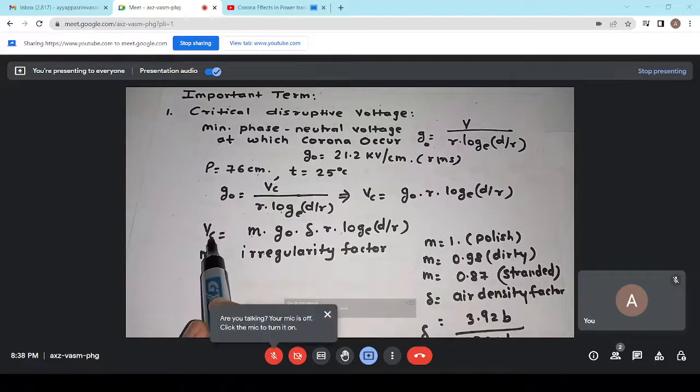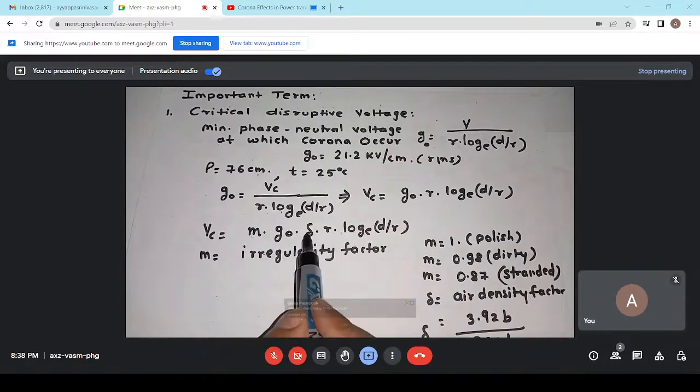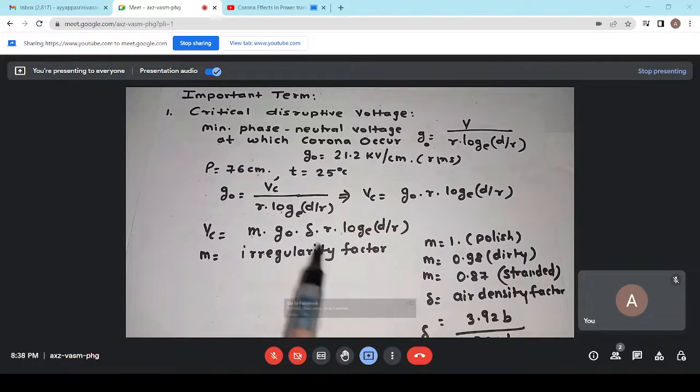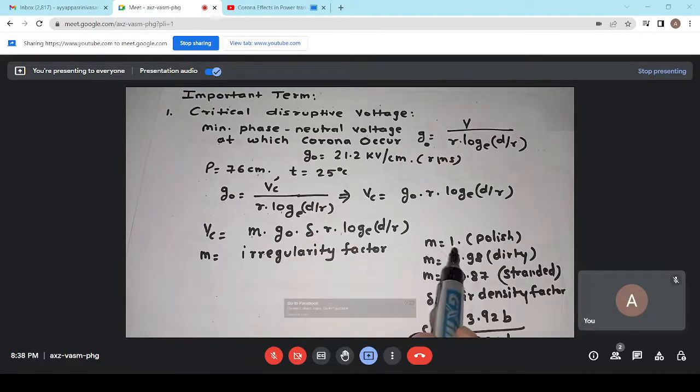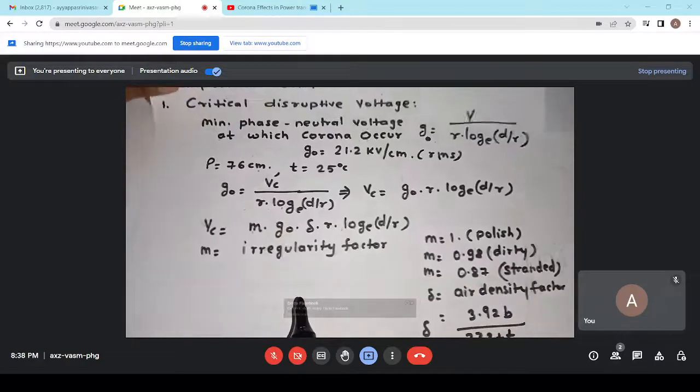Again, we can express this formula in terms of M and delta where M is the irregularity factor and delta is the air density factor. The air density factor's formula is delta is equal to 3.92 B through 73 plus T where B is the atmospheric pressure and T is the temperature. Now, we will see the irregularity factor's value. It is 1 when polished surface is there. It is approximately 0.98 for dirty surface and approximately 0.87 for standard conductor surface. This is all about the critical disruptive voltage.